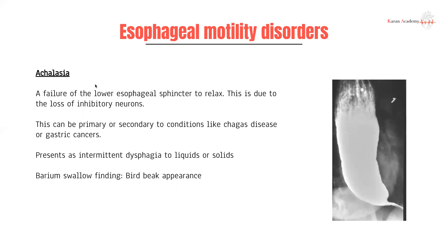Achalasia can be either primary — cause unknown — or secondary to diseases like Chagas disease or gastric cancers. It presents with intermittent dysphagia to liquids or solids. Unlike cancers, which produce a chronic progressive picture, this is intermittent and non-progressive, and can affect both solids and liquids. A barium swallow shows the classic finding: the lower esophageal sphincter is very narrow — this is called the bird beak appearance, because it resembles a bird hanging upside down with a narrow beak. This is the key buzzword for achalasia on barium swallow.